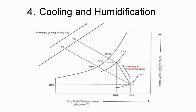In our last video we covered humidification and dehumidification. Till now we have completed four basic processes: humidification, dehumidification, cooling, heating, and one more — cooling and dehumidification. Now moving towards the next remaining process: cooling and humidification, where sensible cooling plus humidification occurs. In the psychrometric chart, from point one to two, this process is cooling and humidification where the humidity of the air gets increased.